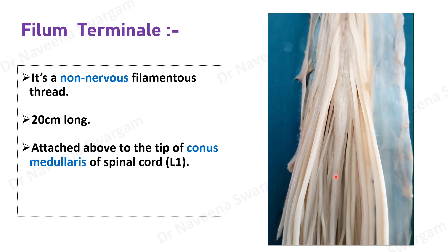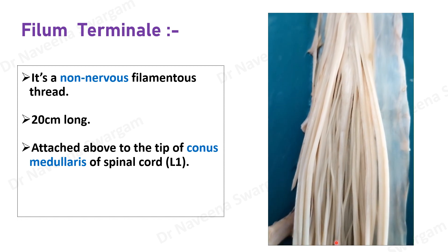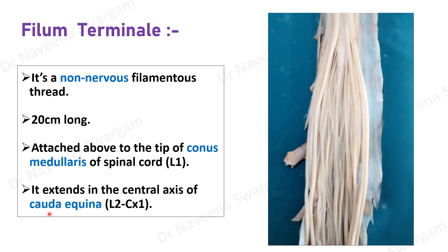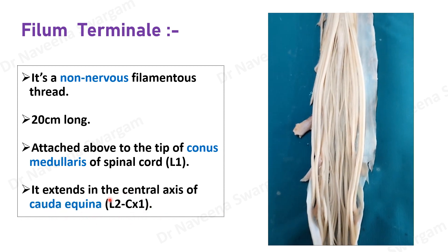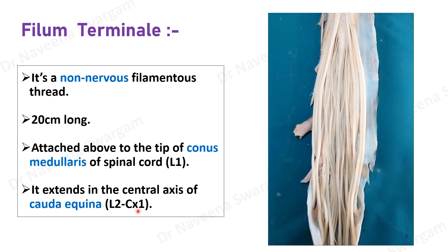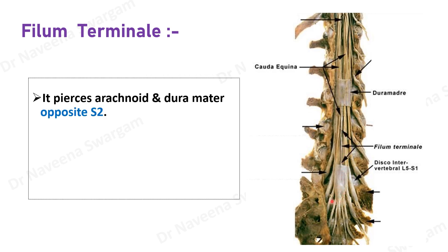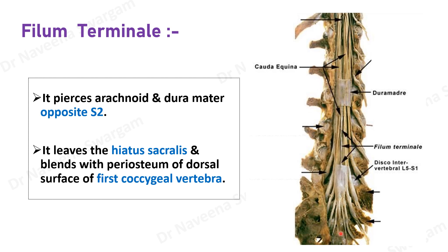From there, the filum terminale descends between a bunch of spinal nerves known as the cauda equina, which is formed by L2 to coccygeal pairs of spinal nerves. It pierces the arachnoid mater and dura mater opposite the S2 vertebra. It then leaves the sacral canal by passing through the sacral hiatus, or hiatus sacralis, and runs for a short distance on the dorsal surface of the coccyx.